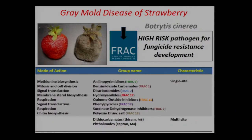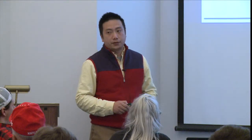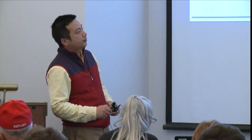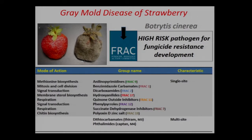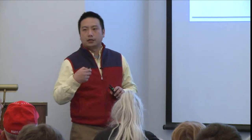There are different active ingredients, chemical classes, and fungicides labeled for strawberry gray mold management. Botrytis cinerea, the pathogen causing this disease, is considered a high-risk pathogen for fungicide resistance development. It has tremendous ability to develop resistance to different chemical classes, especially single-site fungicides. There are two groups of fungicides: single-site and multi-site. Compared to single-site, multi-site fungicides are in general less effective and more toxic; however, multi-site fungicides are not prone to resistance development, whereas single-site fungicides are very prone to resistance development.